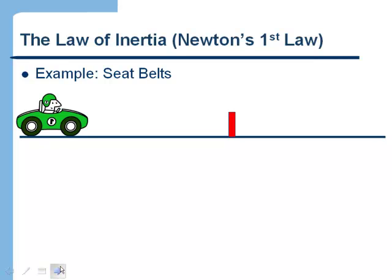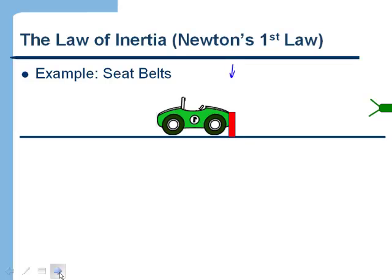Here's another example illustrating Newton's first law: a car with a person not wearing a seat belt hits a barrier. The car gets stopped by the barricade, but because there's nothing to exert a force on the person, they just keep going. That's why we wear seat belts — an object in motion stays in motion unless acted on by a net force. Without a seat belt, you'd go right through the windshield.